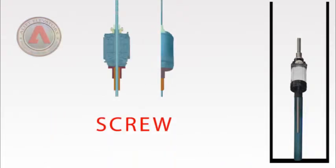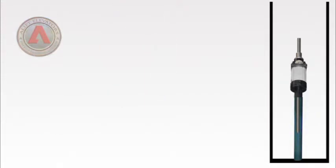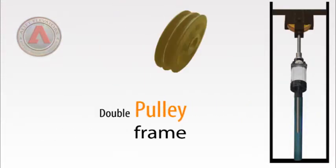A screw is then inserted in the motor to be housed in the hollow pipe. A double pulley frame is then fixed on the top end of the screw.